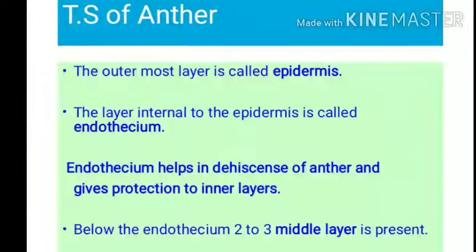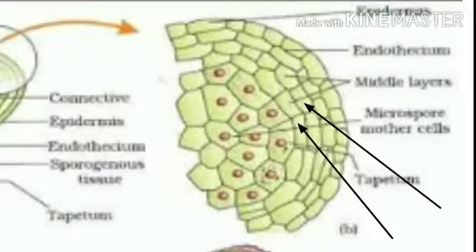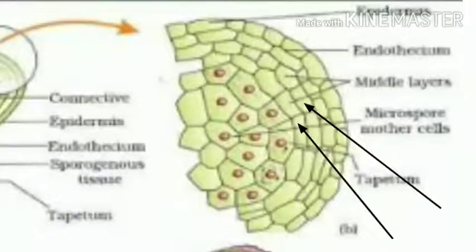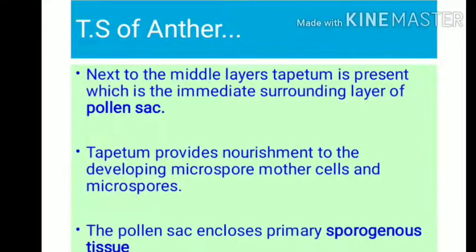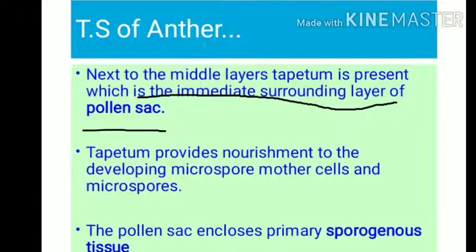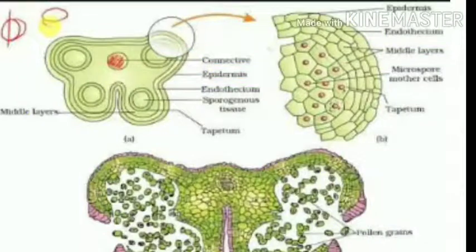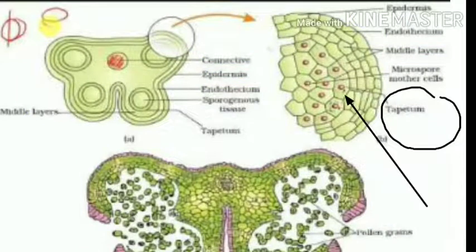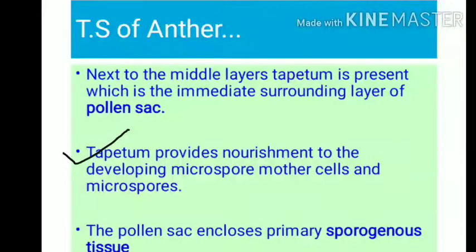Below the endothecium is the middle layer, which consists of two to three layers of cells. Next to the middle layer, the tapetum is present. Tapetum is the immediate surrounding layer of the pollen sac and is called as tapetum.